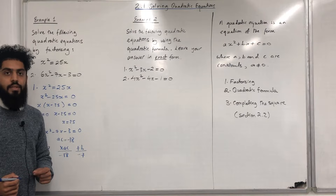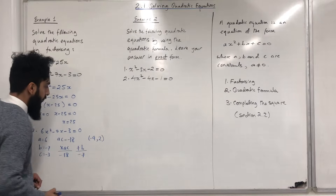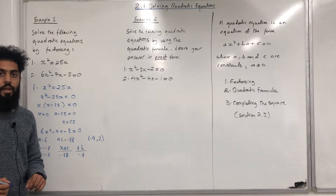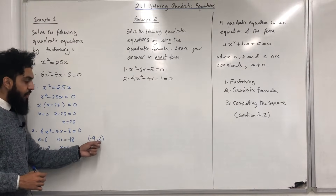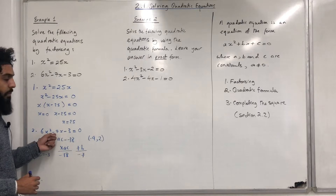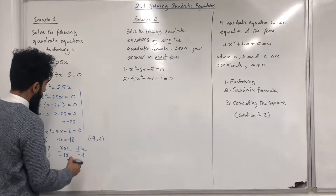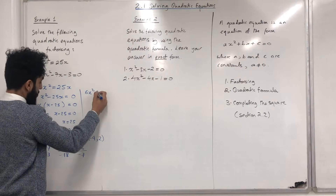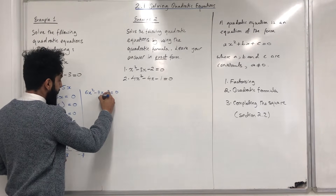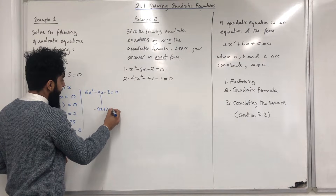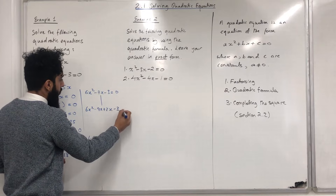Those two numbers are -9 and 2. Minus 9 multiplied by 2 is -18. Minus 9 plus 2 is -7. So we are going to use these two numbers to split the -7X. We have 6X² - 9X + 2X - 3 = 0.